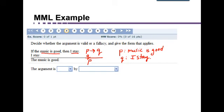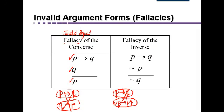Is this one of the valid argument forms or an invalid one? Where did we see that argument form before? We saw it right here. P implies Q, Q happens, therefore P must have happened. That is actually an invalid argument form. Remember, just because P implies Q does not mean that Q implies P. So it's actually invalid.